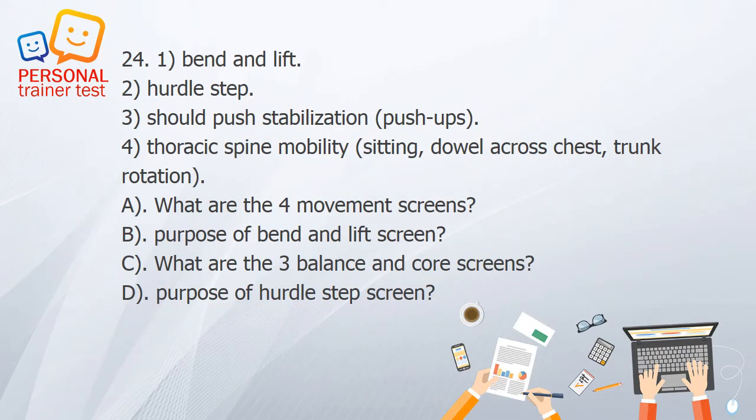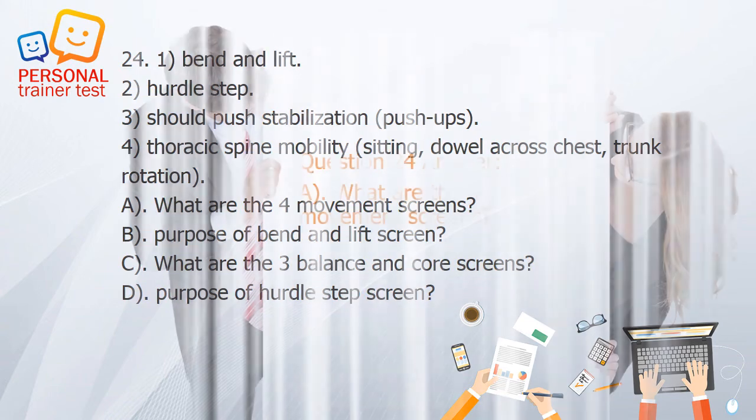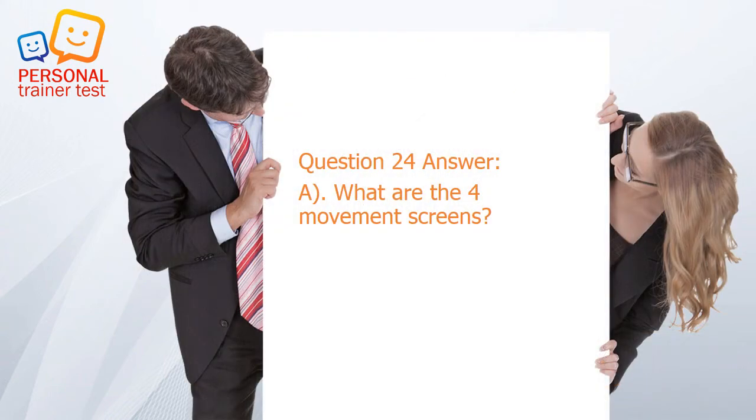Question 24. A. What are the four movement screens? B. Purpose of bend and lift screen. C. What are the three balance and core screens? D. Purpose of hurdle step screen. Answer: A. The four movement screens are: 1. Bend and lift; 2. Hurdle step; 3. Shoulder push stabilization (push-ups); 4. Thoracic spine mobility — sitting with dowel across chest, trunk rotation.